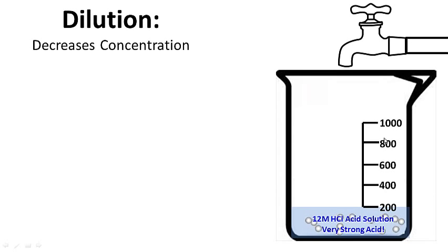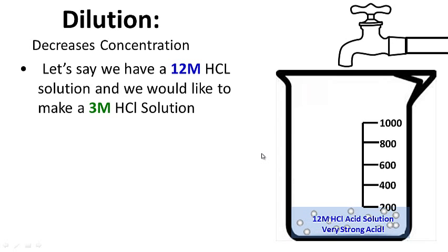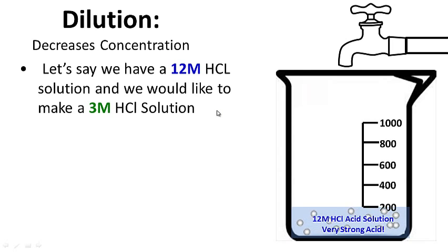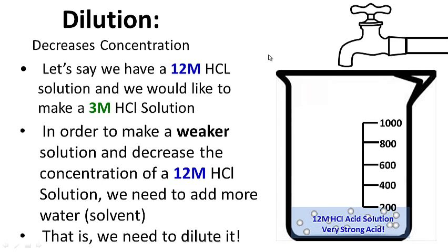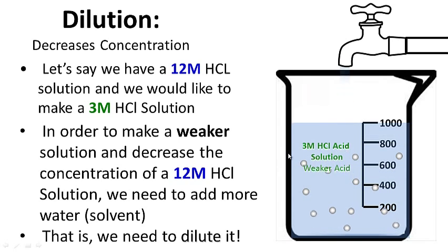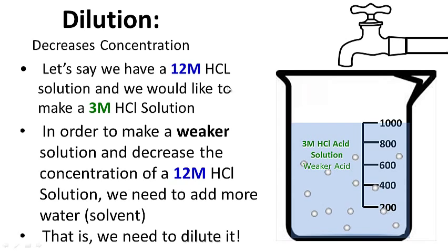Dilution decreases concentration. Let's say we have a 12 molar HCl acid solution — a very strong acid — and we'd like to make a three molar HCl solution so it's not as strong. In order to decrease the concentration of a 12 molar HCl solution, we need to add more water or solvent. Watch — we add more water and dilute it, and now we have a three molar HCl acid solution. Dilution decreases concentration.